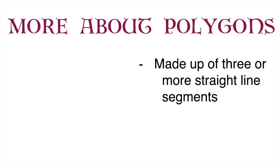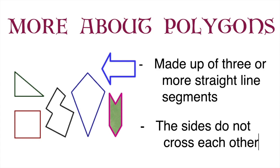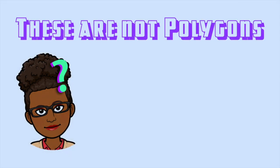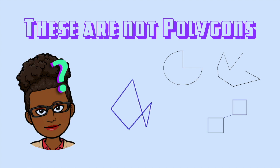Polygons are made up of three or more straight line segments. The sides of a polygon do not cross each other. Knowing that, these shapes are not polygons. Can you guys guess why? Well, from what we previously discussed, we know that a polygon is not a curved shape. A polygon is enclosed, which means that all of the line segments connect. And lastly, the lines of a polygon do not cross each other.